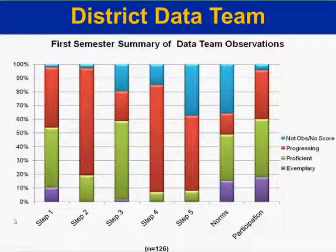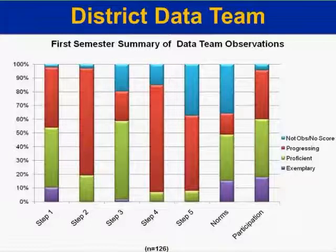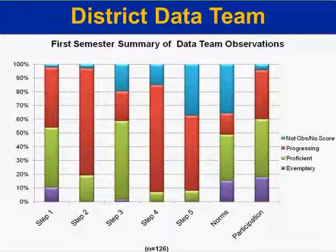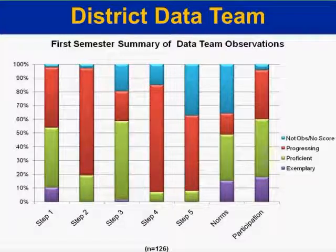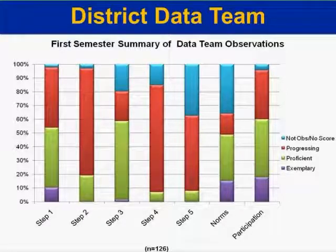Here's what a district data team might look at: a summary of 126 observations of instructional data teams throughout the district. Step two was showing a lot of red — teams weren't very good at it at that point in the year. In response, the district offered professional development in which teachers brought student work samples from assessments to the PD and learned how to more effectively analyze those work samples against the standards and unwrapped standards to determine specific strengths and needs. Up to that point, many teams were only identifying what kids got right or wrong, and not why. So the district offered both formal training sessions and on-the-ground coaching and support from instructional resource staff out to the buildings.